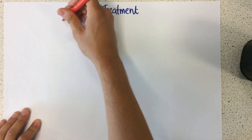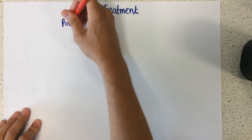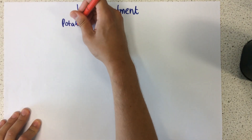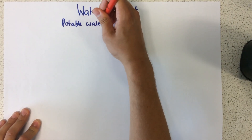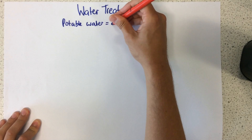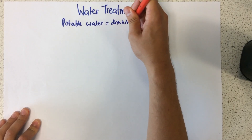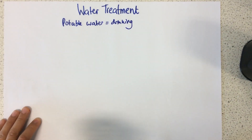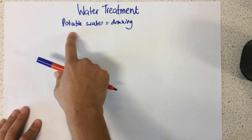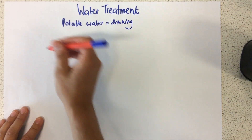So first of all, whenever you hear the phrase 'potable water', it means drinking water. And in the UK there are three main ways that we can get our potable water.